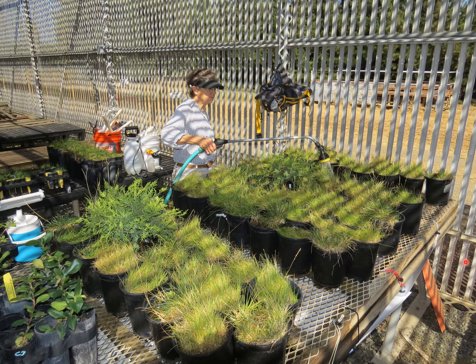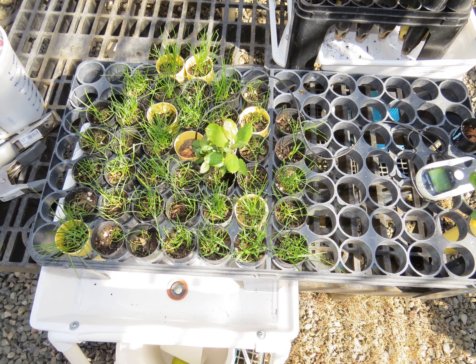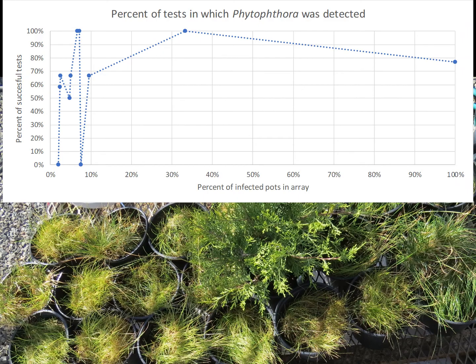Here's my partner Elizabeth Bernhardt irrigating one of our tests set up at UC Davis. These tests involved arrays of non-infected pots of plants — in this case, grasses grown in pasteurized soil — with one or more known Phytophthora-infected source plants included. Here's a test array with smaller containers showing a single infested toyon surrounded by grass-filled cells. We used different hosts and different container sizes, and we looked at how often we detected Phytophthora based on the percentage of infected plants in the overall array.